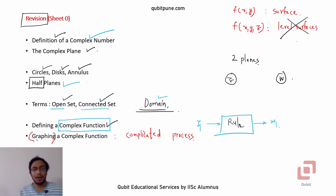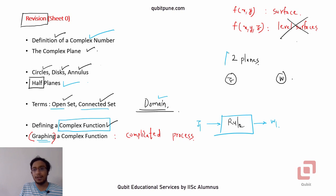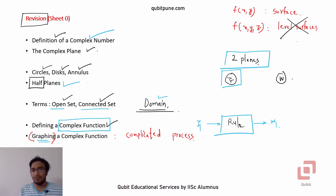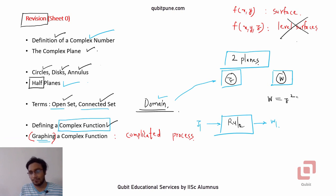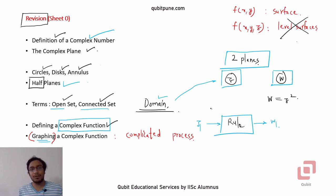At the end we saw how we can graph a complex function. The main thing here is we need 4 axes, and because we don't have 4 axes, we take the help of two planes. The first plane is the z-plane — the input values or domain of the function — and then the associated w values are plotted on the second plane, which is the w-plane. We saw the example of the function w = z². So like the input has both real and imaginary parts, the output too has both real and imaginary parts.